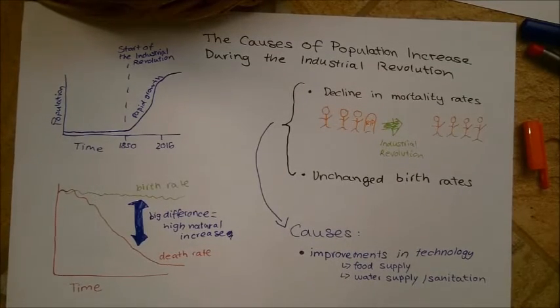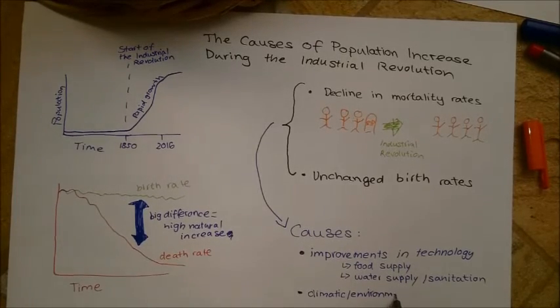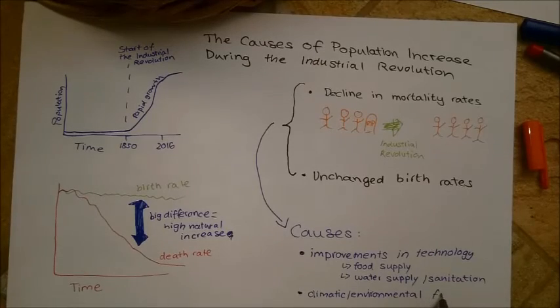The second could be that changing social values and habits kept most people from contraception, so people still had children. The third was that people could provide sustenance for more children, so people wanted to have more children.